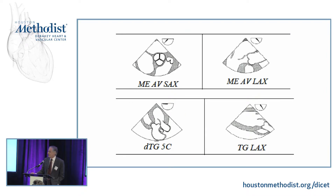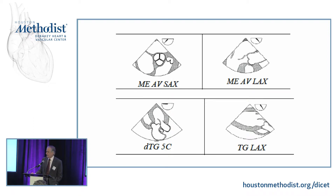These are the echo views we use to evaluate aortic stenosis. The mid-esophageal short and long axis views are used primarily to look at valvular morphology and movement. The transgastric views we use to line up the Doppler cursor with the flow to get our most accurate velocity measurements.